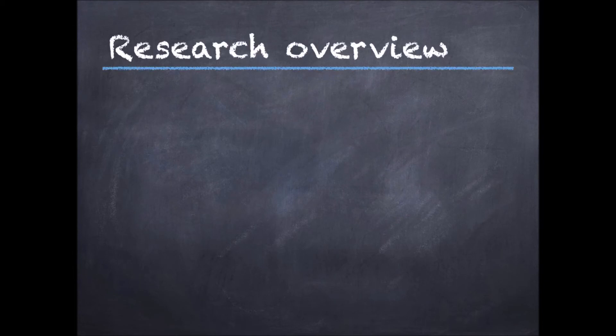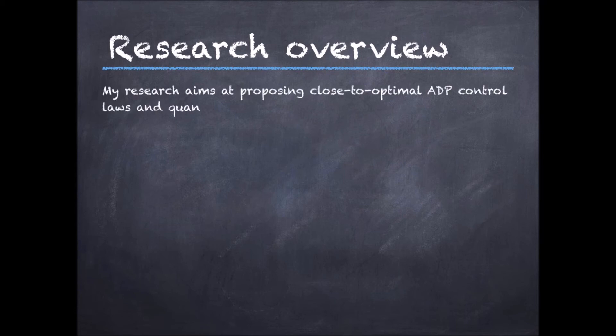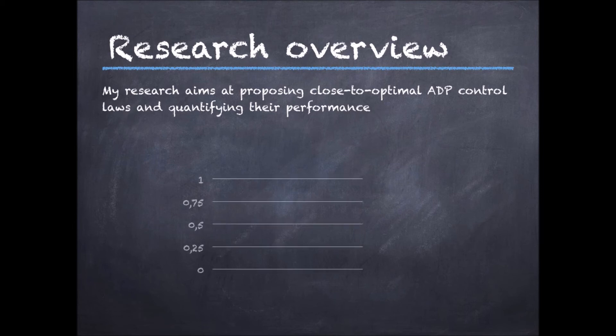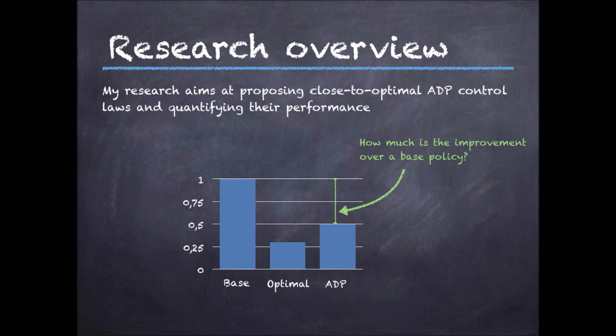In my research, I focus on proposing approximate dynamic programming policies which are close to optimal and quantifying their performance. Namely, I try to answer two questions. Say that we normalize the costs indicating performance of the base policy as equal to one, and also that we plot the performance of an optimal policy which is naturally better and of an approximate dynamic policy which is hopefully better. Then I try to answer how much does an approximate dynamic programming policy improve over a base policy and how far it is from the optimal policy.